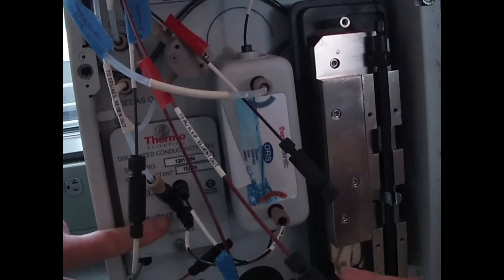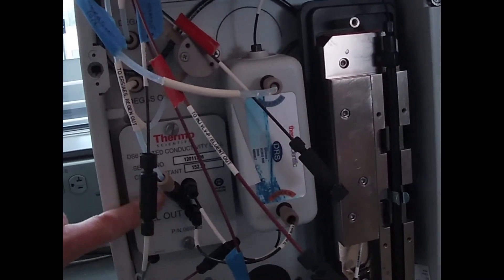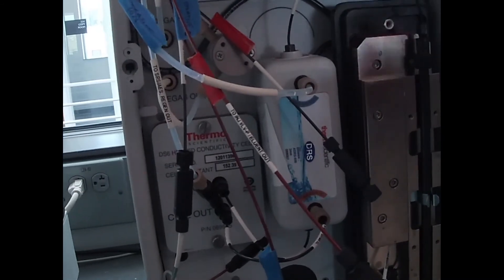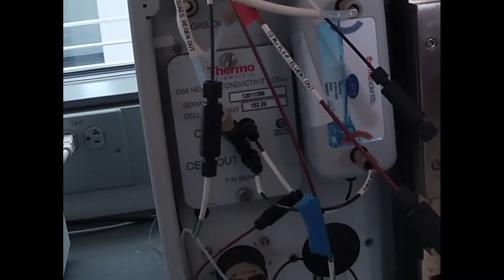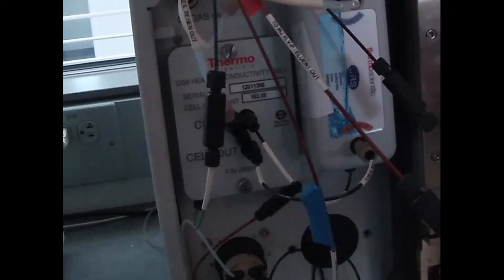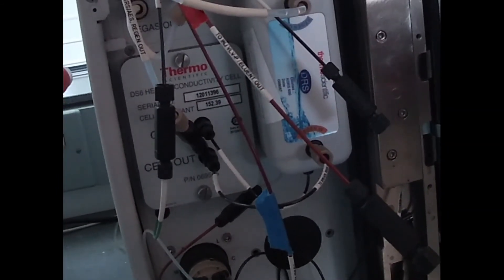So we pass through here and then we actually go into our conductivity cell. The conductivity cell is a flow-through cell, and so we detect the conductivity which is reflective of the number of ions that are in solution. The more ions, the higher the concentration, the higher the current. Therefore, you're going to get a larger signal.